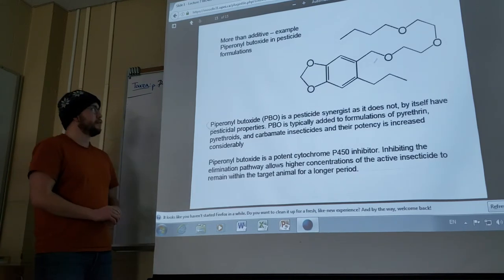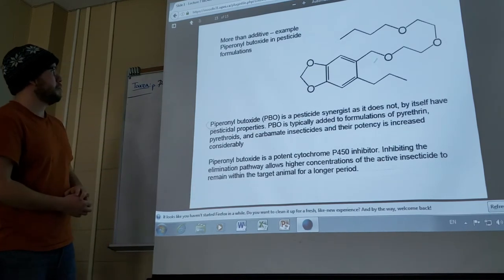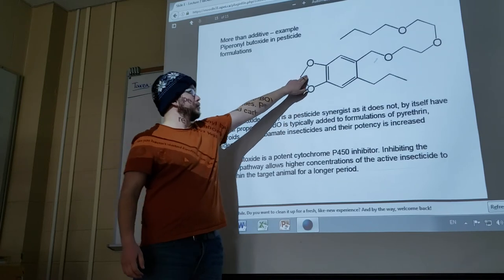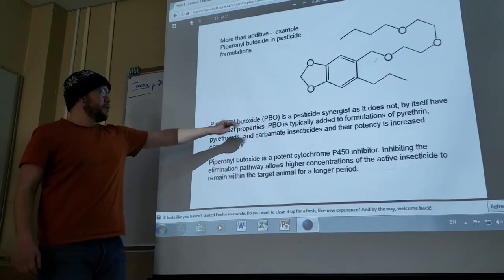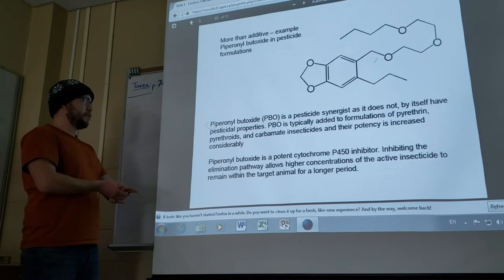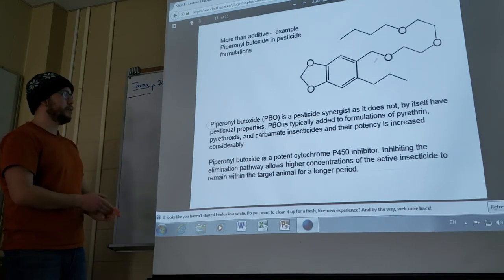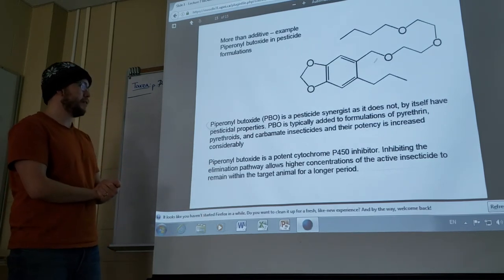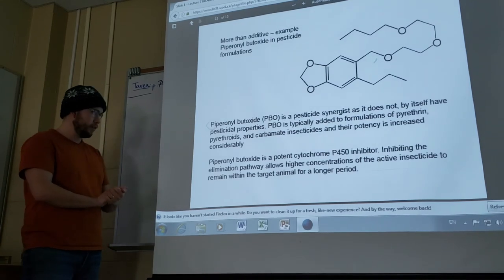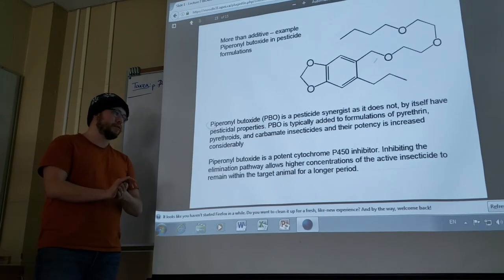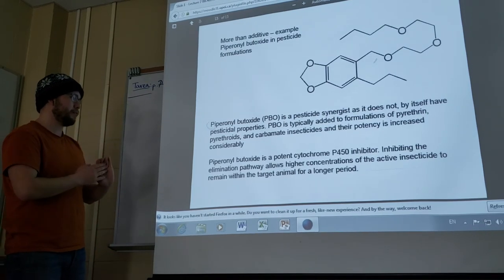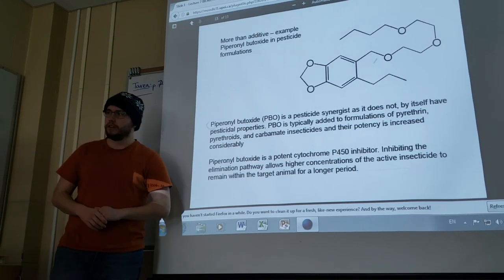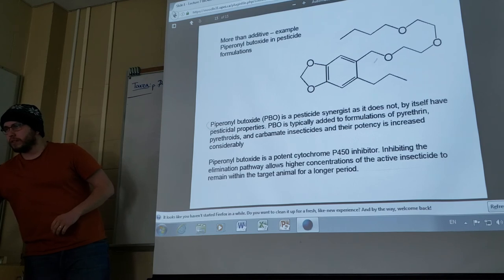And then we have the more than additive example: piperonyl butoxide in pesticide formulations. You can see it there with the two oxygens on the pyranose ring. Piperonyl butoxide (PBO) is a pesticide synergist as it does not by itself have pesticide properties. PBO is typically added to formulations of pyrethrin and pyrethroids and carbamate insecticides as their potency is increased considerably. Piperonyl butoxide is a potent cytochrome P450 inhibitor. Inhibiting the elimination pathway allows higher concentrations of the active insecticide to remain within the target animal for a longer period. This concludes lecture 7.